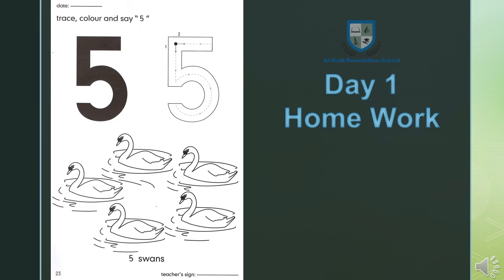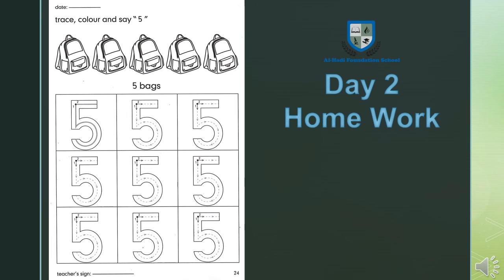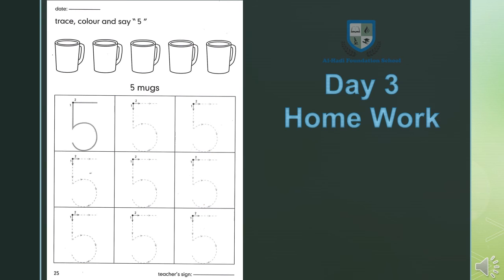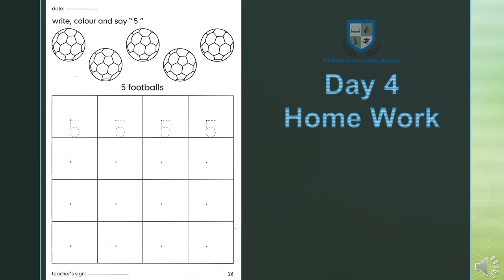First day: we have page number 23 — trace and color. Five swans, five hunts — we will trace. Second day: page number 24 — trace and color. Five bags, we will trace. Third day: page number 25 — trace. Five mugs, five mugs, we will trace. Fourth day: page number 26 — trace. Five footballs, five footballs, we will trace. For four days, we will listen to this lesson.